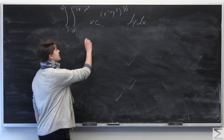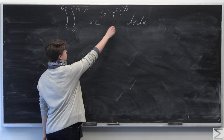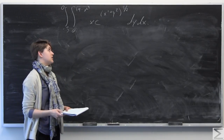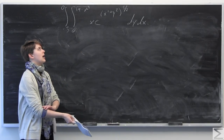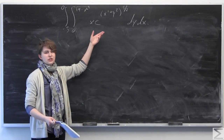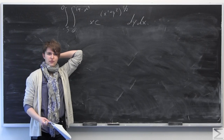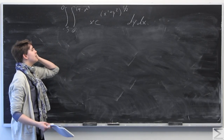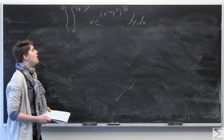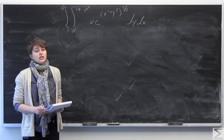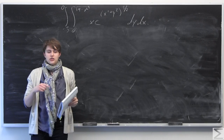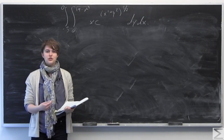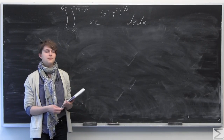This integrand is not something we know how to integrate with respect to either x or y, because we can't make a u substitution — there's no function and its derivative easily accessible to us. So what we're going to try to do is graph the bounds of integration and see if we can switch into a different coordinate system.